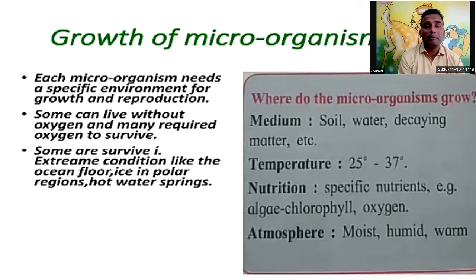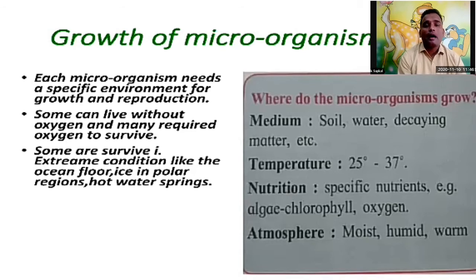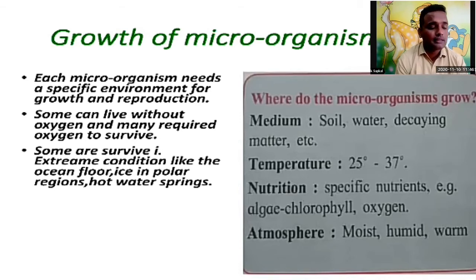The polar temperature is very cold — near about minus 30 to 40 degrees. Even in those conditions microorganisms can survive. For us, the suitable temperature is about 25 to 30 degrees Celsius, with specific nutrition including algae, chlorophyll, and oxygen, and a moist and warm atmosphere.